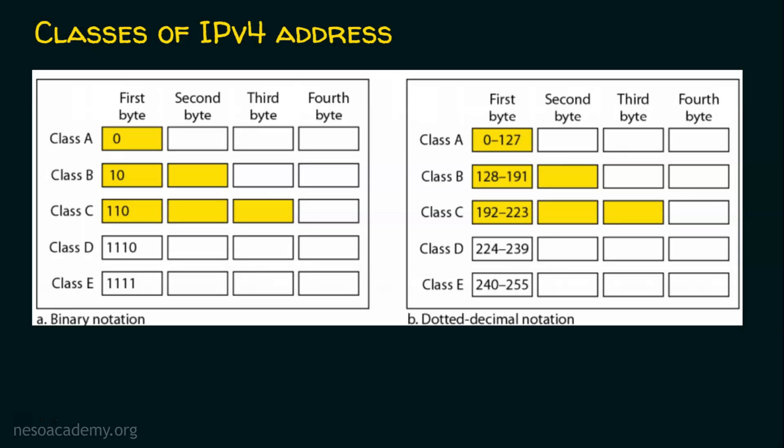IPv4 addresses are 32 bits long. These 32 bits are organized into four octets, or four bytes, and each byte is eight bits long. So we have four bytes in an IPv4 address, also called four octets, because every octet contains eight bits — eight plus eight plus eight plus eight equals 32 bits.